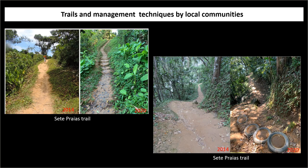Some trails and management techniques by local communities are shown here. The Seven Beaches trail, photographed by Maria in 2014, shows the trail without any management. The same trail photographed in 2020 shows that with management there is very little soil erosion. Another part of the Seven Beaches trail without management is shown alongside the same section managed using old tires filled with soil, which serve as steps and protect the trail against erosion.